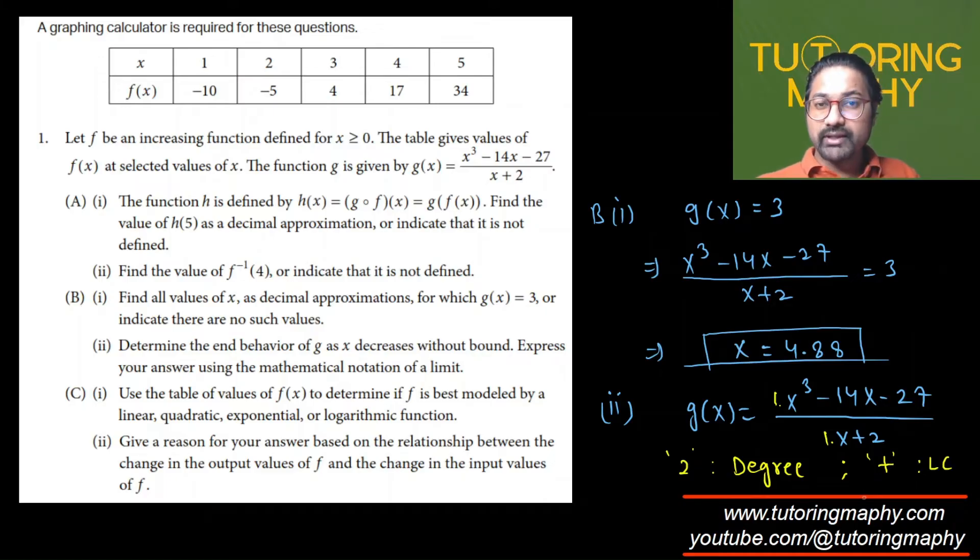What happens when the degree is even and the leading coefficient is positive? Either way, it goes up. If x decreases, the function increases; if x increases, the function also increases. They want us to write the answer using mathematical notation of the limit. The limit as x tends toward negative infinity of G(x) will approach infinity, because if x decreases, y increases.